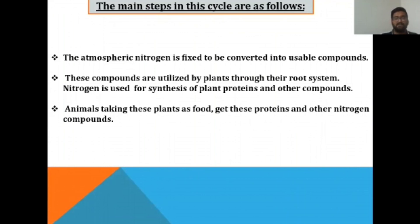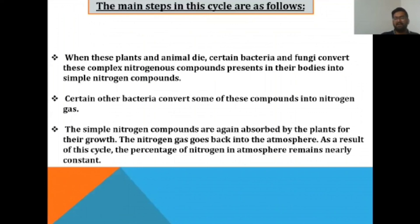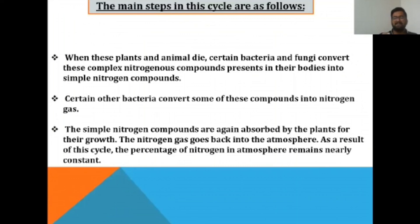The main steps in the nitrogen cycle are: first, atmospheric nitrogen is fixed into usable compounds; second, these compounds are utilized by plants through their root systems for synthesis of proteins and other compounds; third, animals obtain these proteins by eating plants; fourth, when plants and animals die, bacteria and fungi convert the complex nitrogenous compounds in their bodies into simple nitrogenous compounds; fifth, certain bacteria convert some of these simple compounds back into nitrogen gas, which returns to the atmosphere — keeping the percentage of nitrogen in the atmosphere nearly constant.